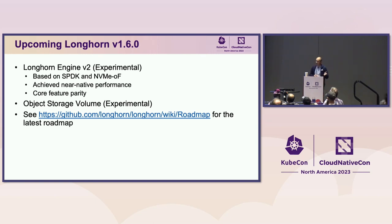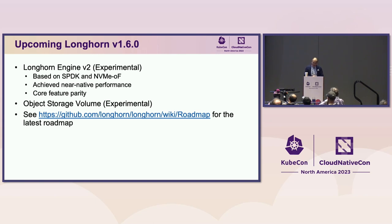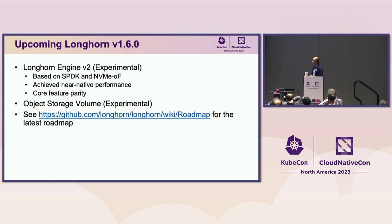The most interesting upcoming feature is Longhorn 1.6, where we are working on the SPDK engine — called Longhorn Engine v2 — based on SPDK and NVMe over Fabrics technology. SPDK, the Storage Performance Development Kit, was originally developed by Intel for its Optane storage and uses polling instead of interrupts to achieve maximum I/O performance. By rewriting the Longhorn engine based on SPDK, we have achieved near-native performance for the v2 engine.